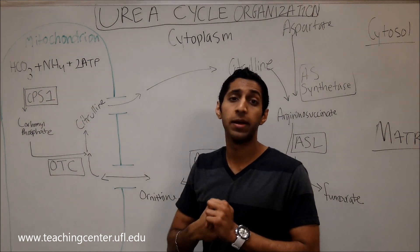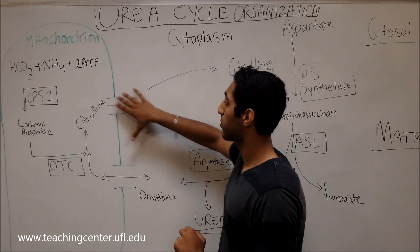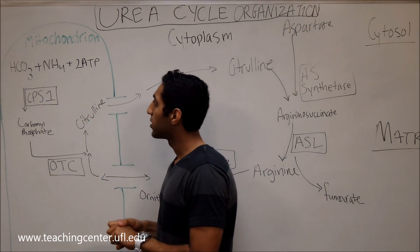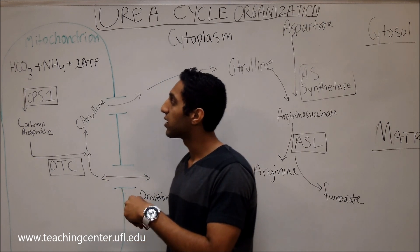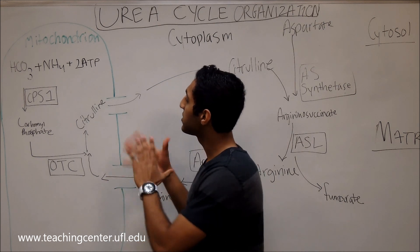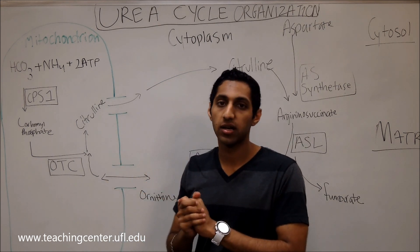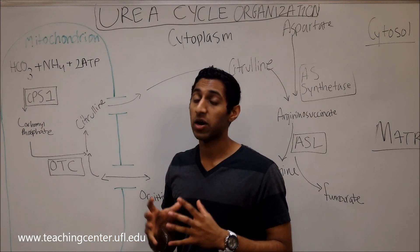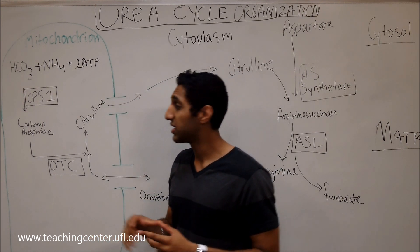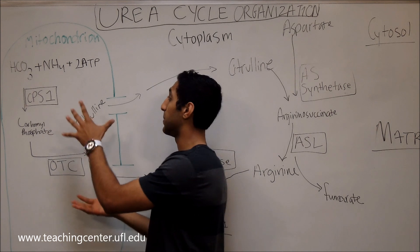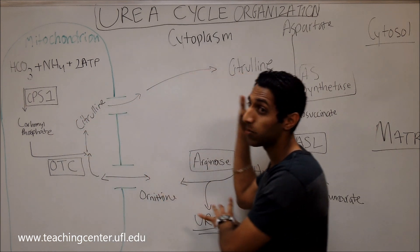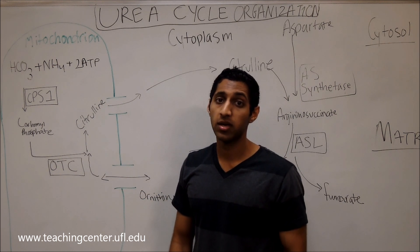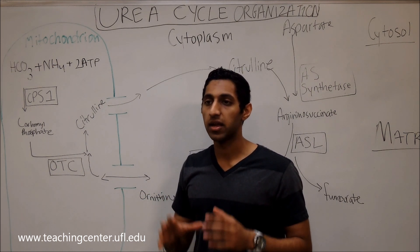We see right here that CPS1 briefly takes in ammonium, packs it into carbamoyl phosphate, and exports it as citrulline. The reason the mitochondrion does this part is because of how important the proton gradient is — it doesn't make sense to be packing ammonium out in the cytoplasm when all the ammonium is doing damage in the mitochondrion.